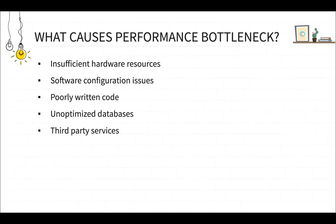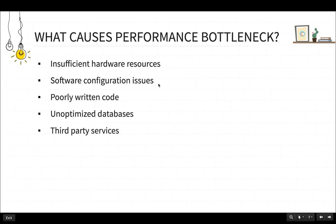What causes performance bottlenecks? Some common reasons are: insufficient hardware resources — for example, your application's CPU or memory are not adequate to handle the user load. Software configuration issues — if one of your application settings is not configured properly, a performance bottleneck can occur. Poorly written code — if developers have used an inefficient algorithm or are following poor coding practices, a performance bottleneck can also occur.